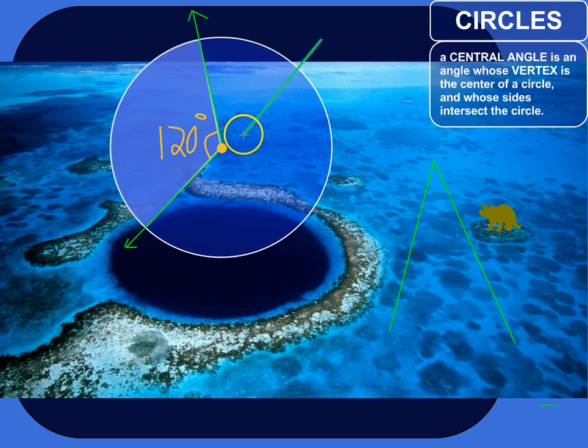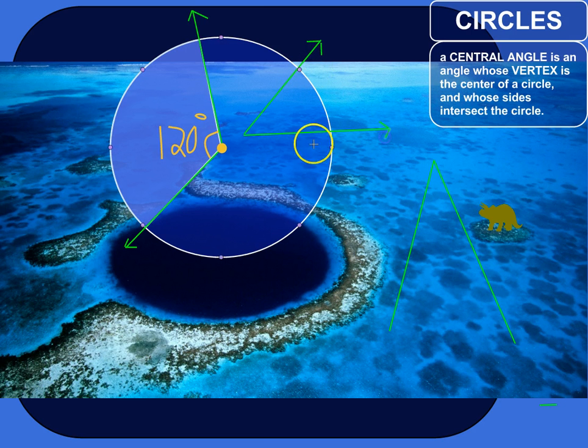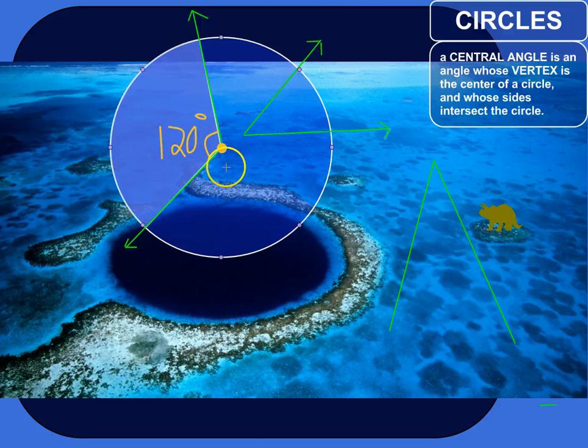This would not be a central angle because even though its sides are intersecting with the circle, the vertex of the angle is not exactly lined up with the center of the circle. So it's not a central angle. It is an angle, just not central.